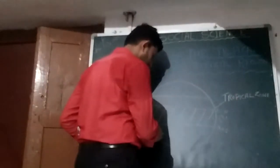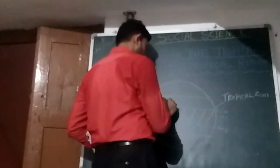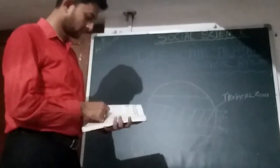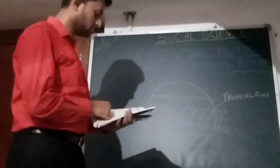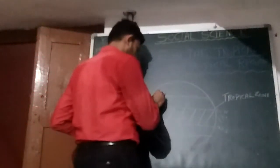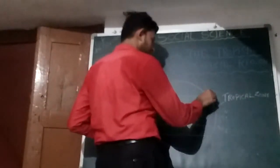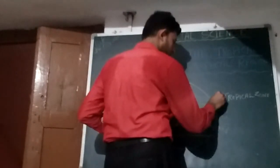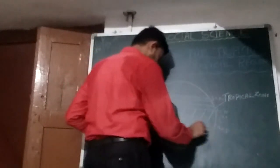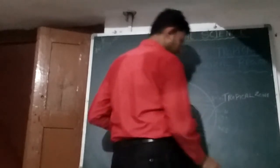The subtropical zone covers 20 degrees to 30 degrees latitude in both hemispheres — that is, 20 to 30 degrees north latitude in the northern hemisphere and 20 to 30 degrees south latitude in the southern hemisphere. This area is called the subtropical zone.